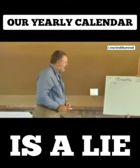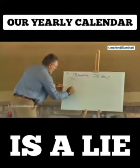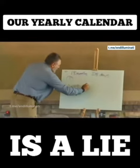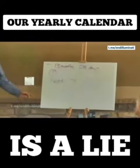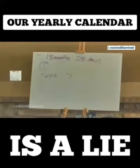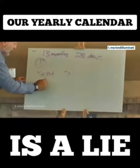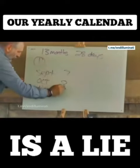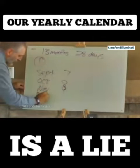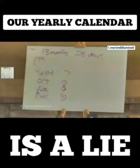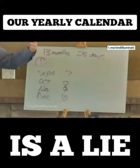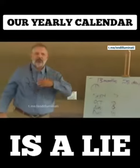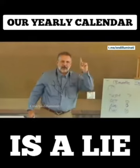What does Sept mean? Seven. I thought that was the ninth month. What does Oct mean? What does Nov mean? What does Dec mean? It's supposed to be the 7th, 8th, 9th, and 10th month. Jan is 11. Feb is 12. March is 13. April is our first month.